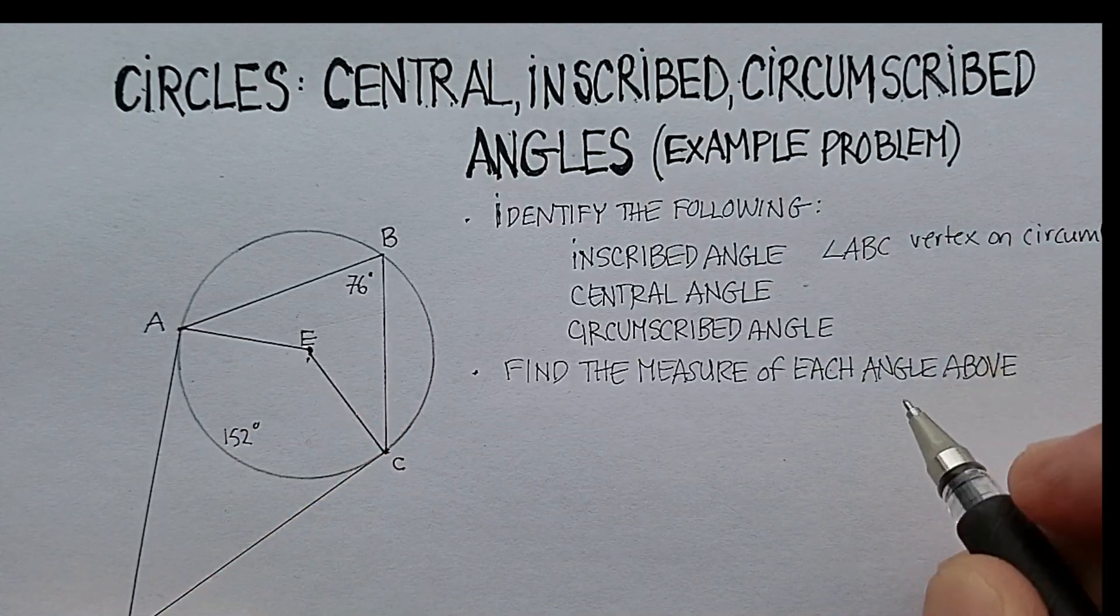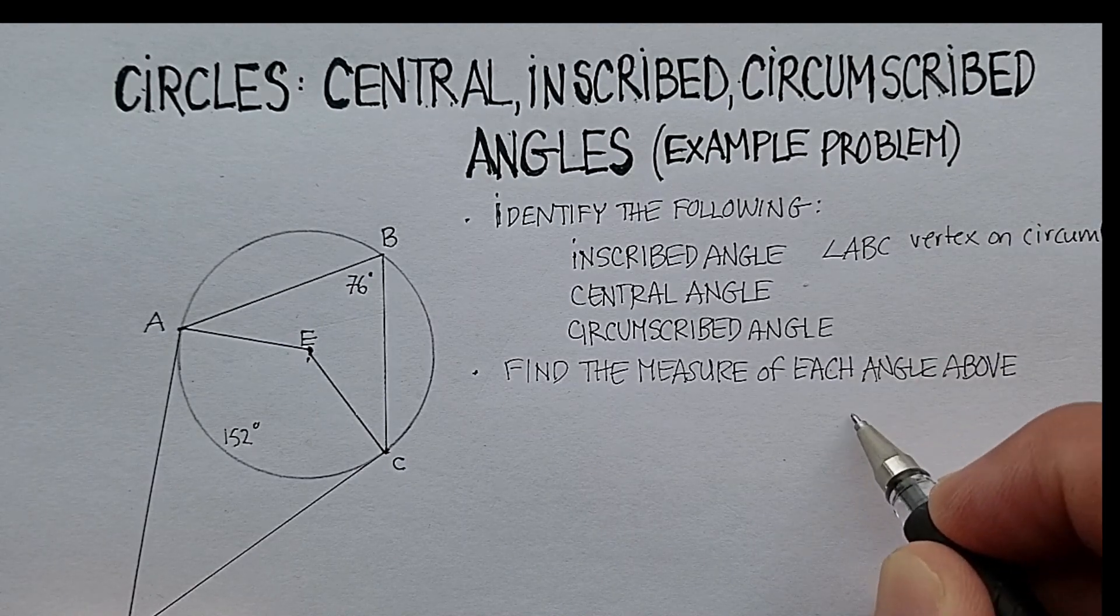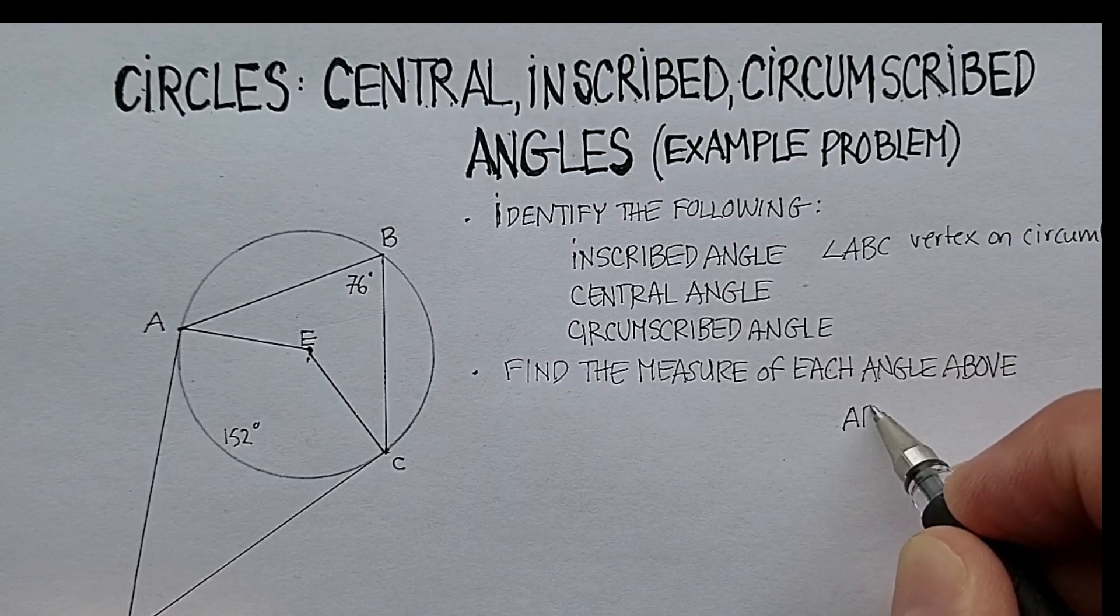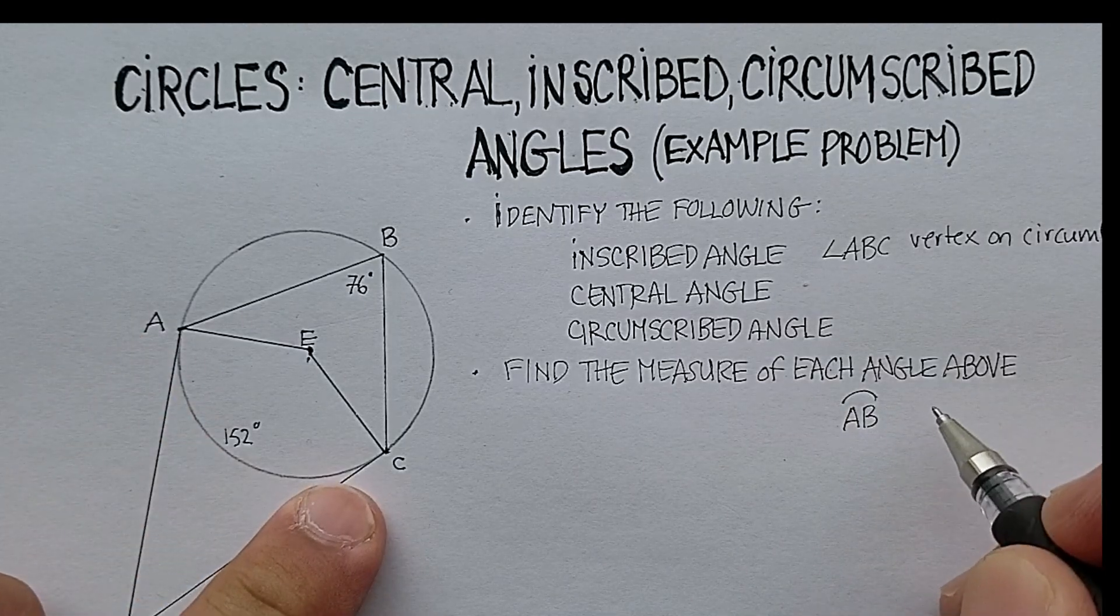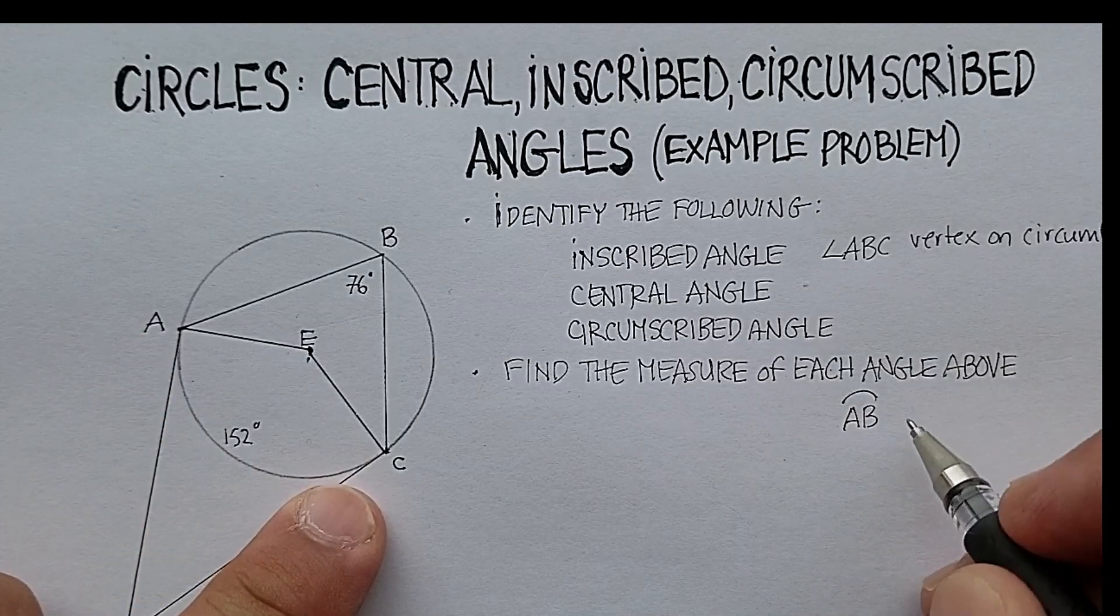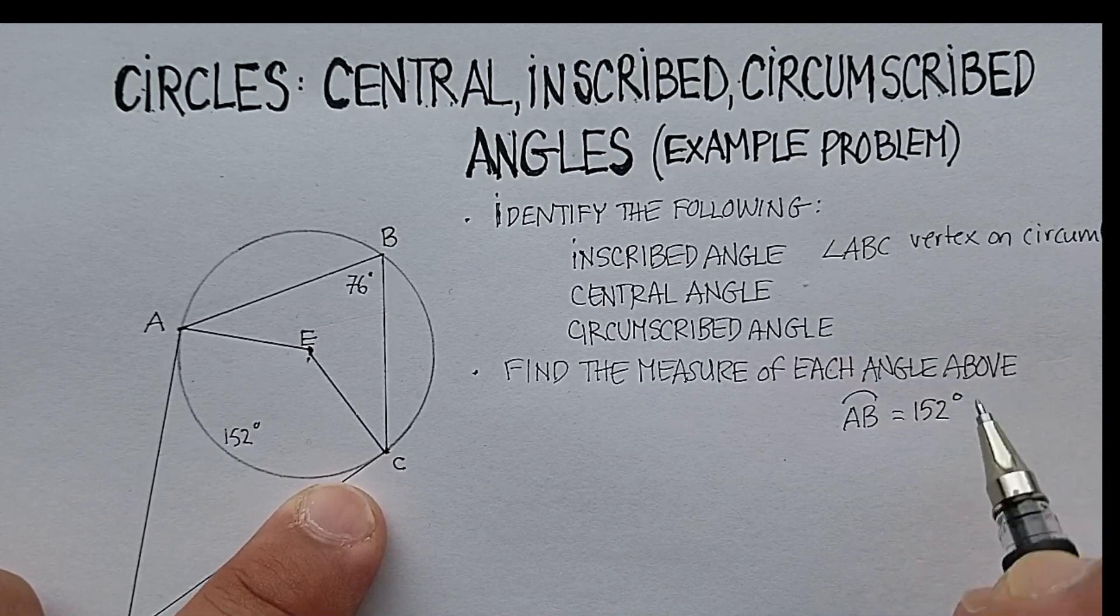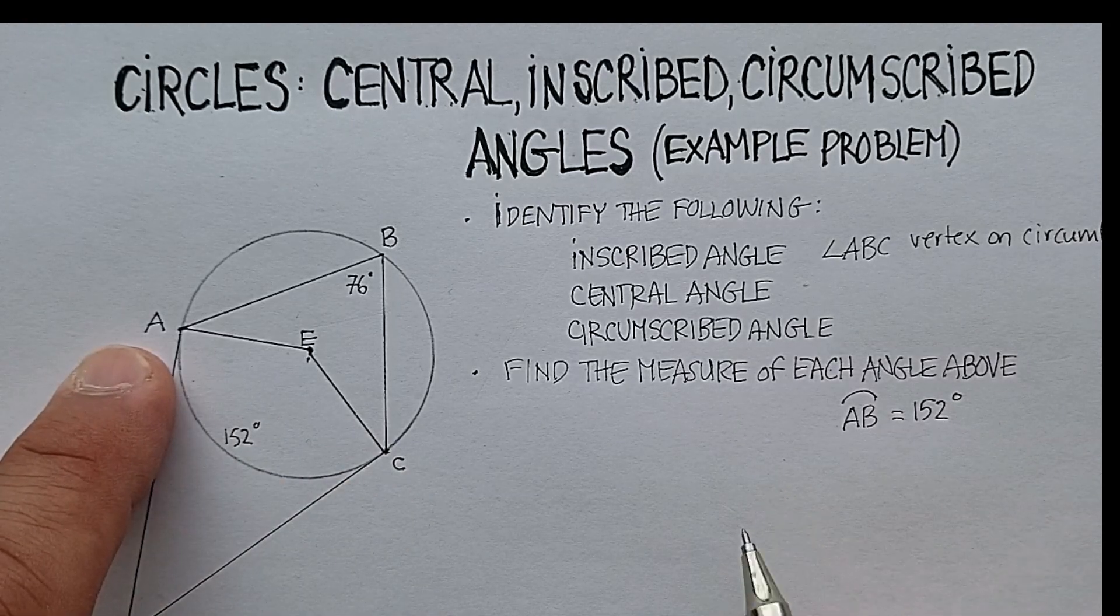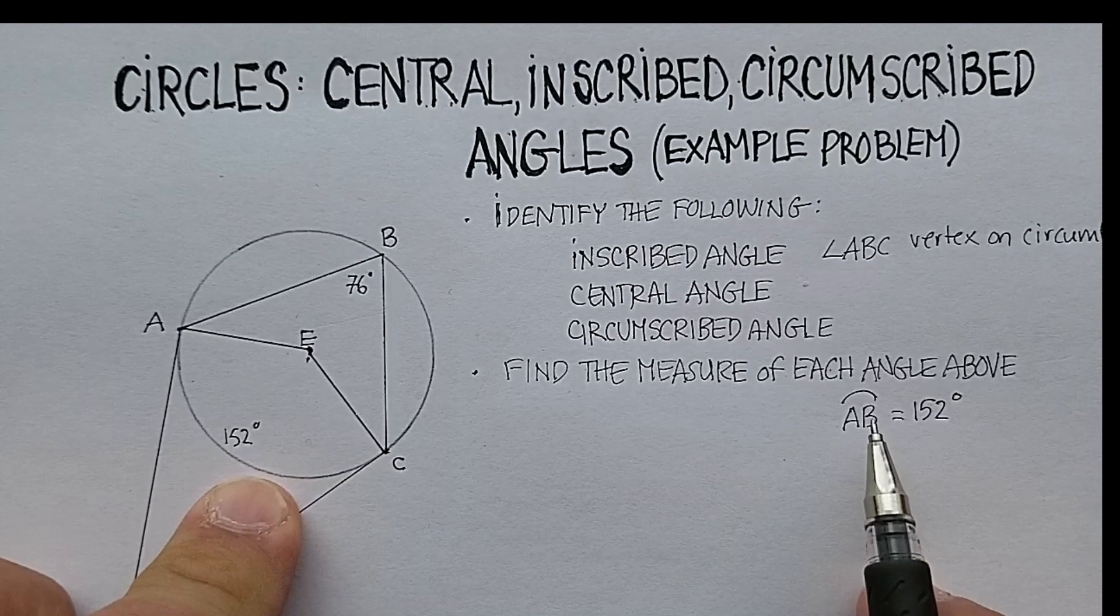Okay, so I'm just going to say over here, this is an aside, arc AC, remember that you draw a minor arc that way, is 152 degrees. Remember, any arc that's less than 180 degrees is a minor arc. Okay, good.